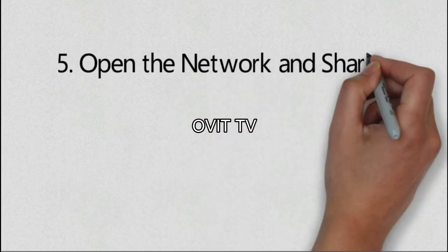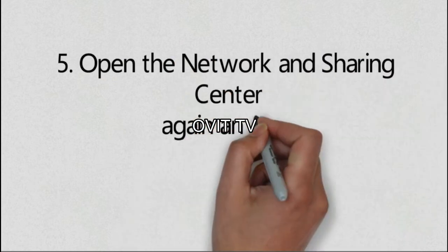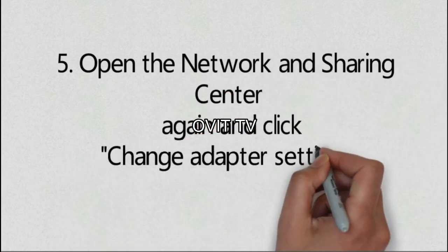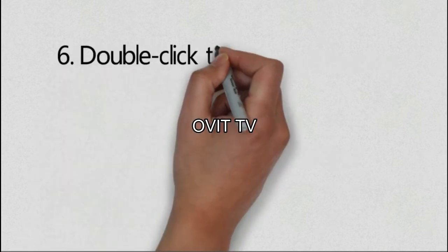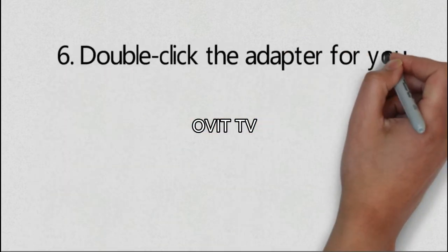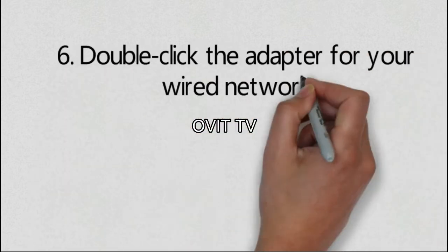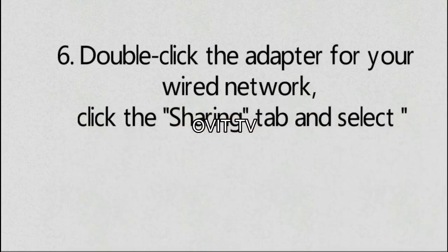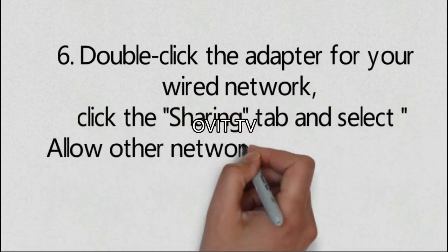Step 5: Open the Network and Sharing Center again and click Change Adapter Settings. Step 6: Double-click the adapter for your wired network.